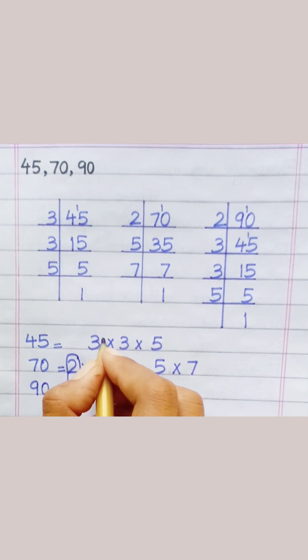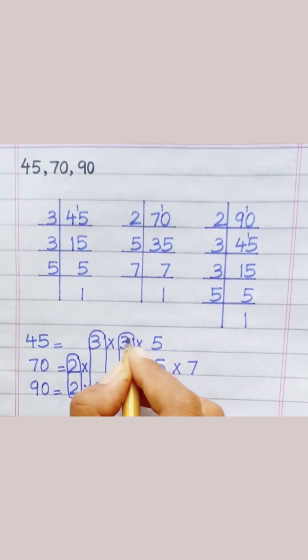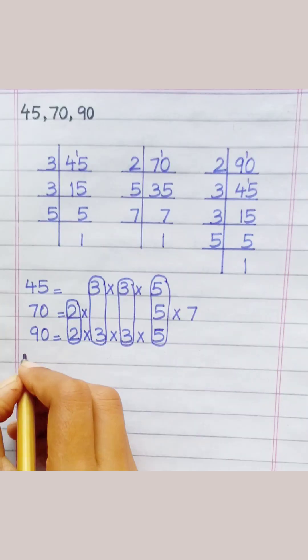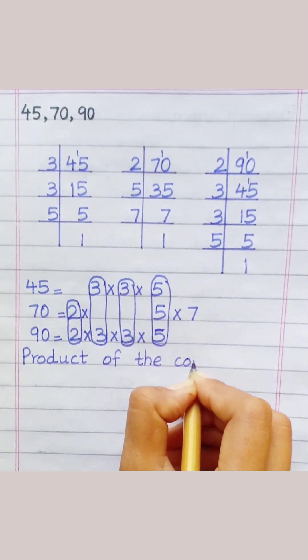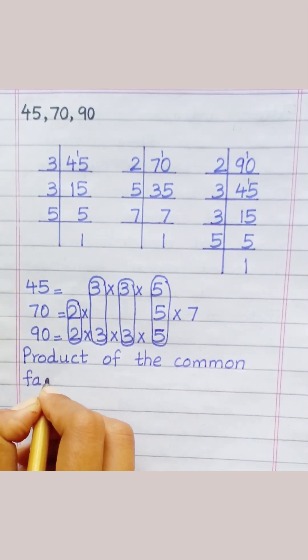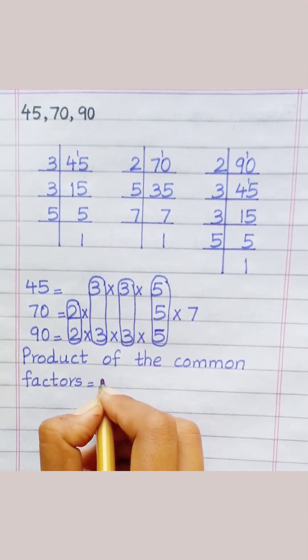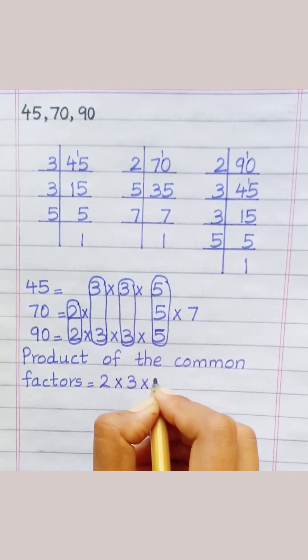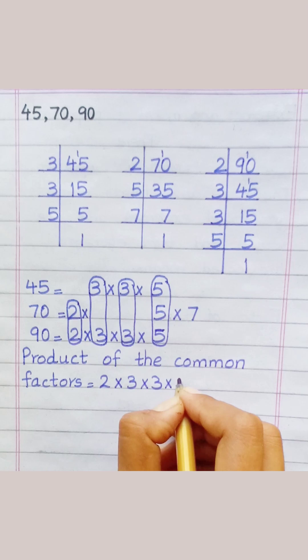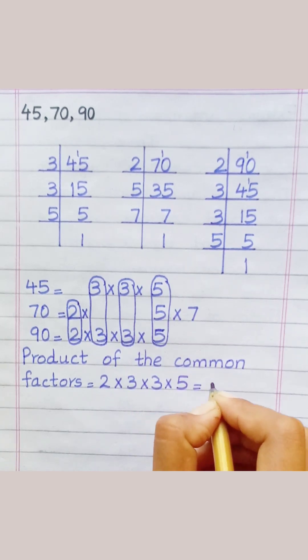Loop the factors that are common to all of the given numbers. Product of the common factors equals two multiply three multiply three multiply five, equals ninety.